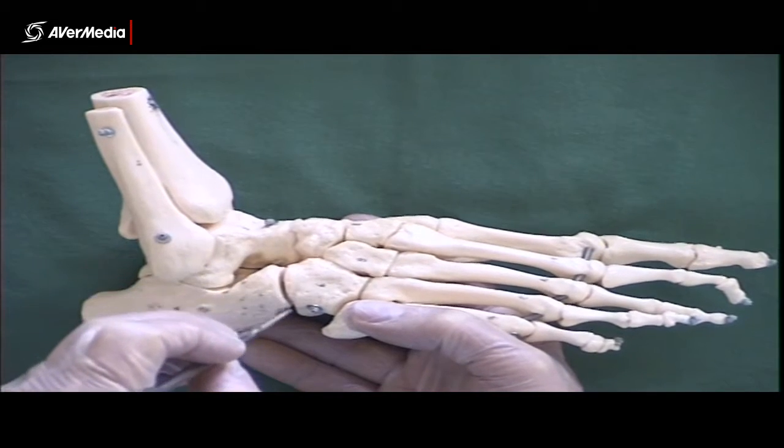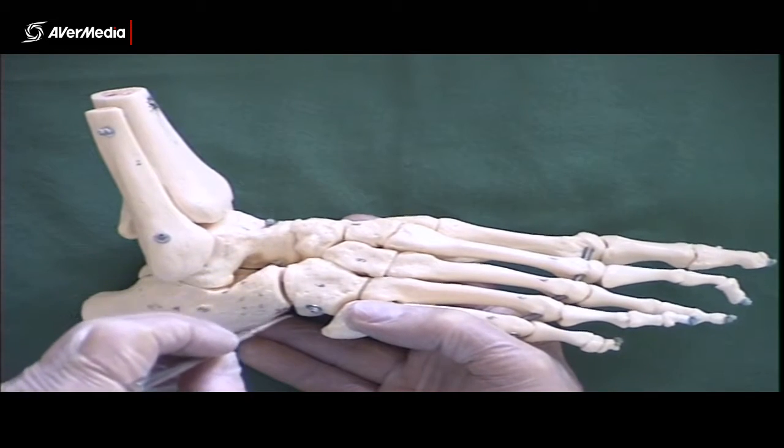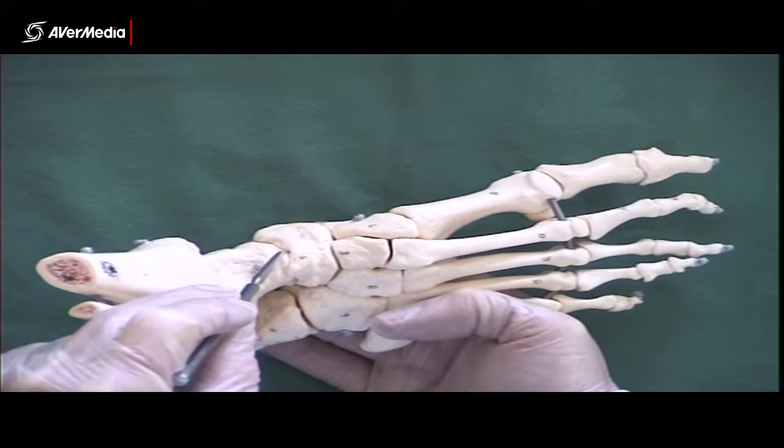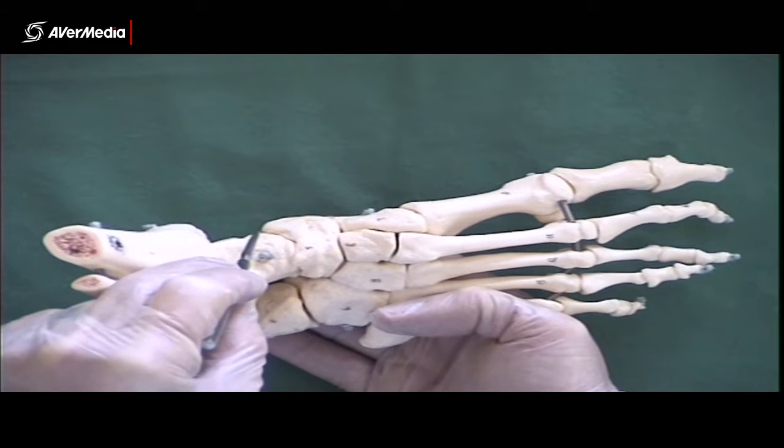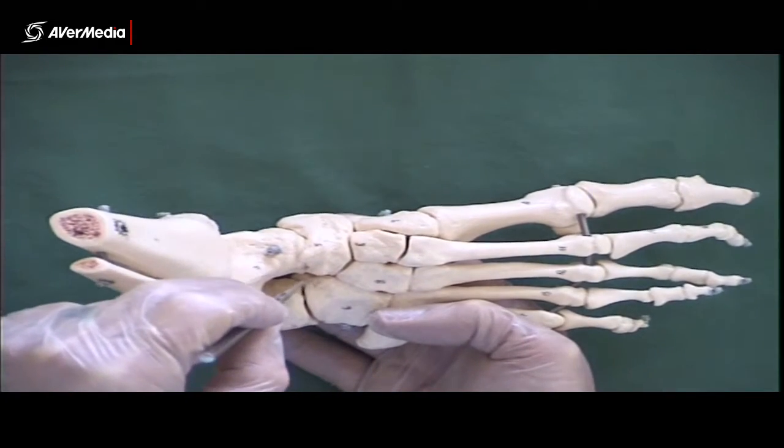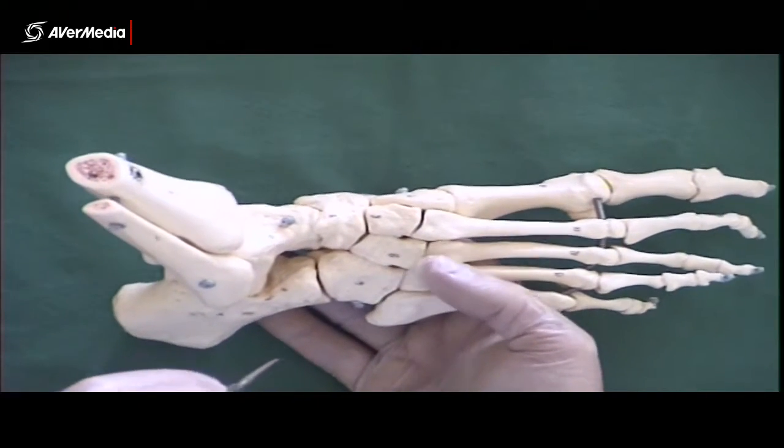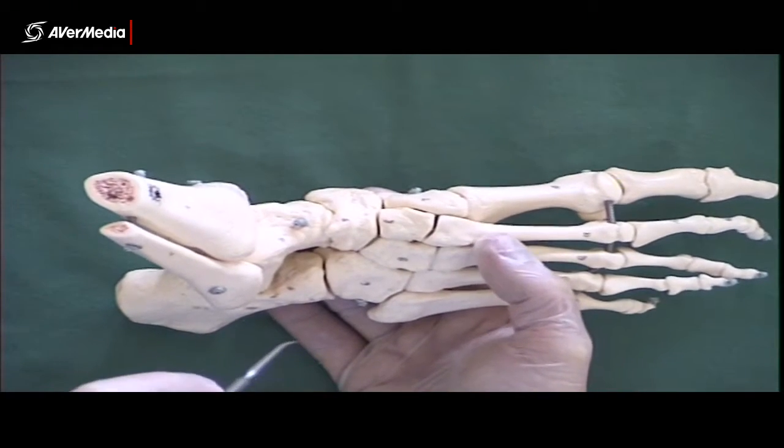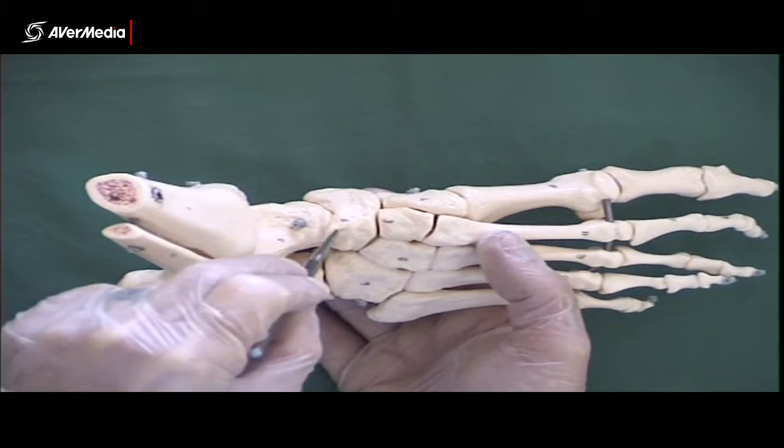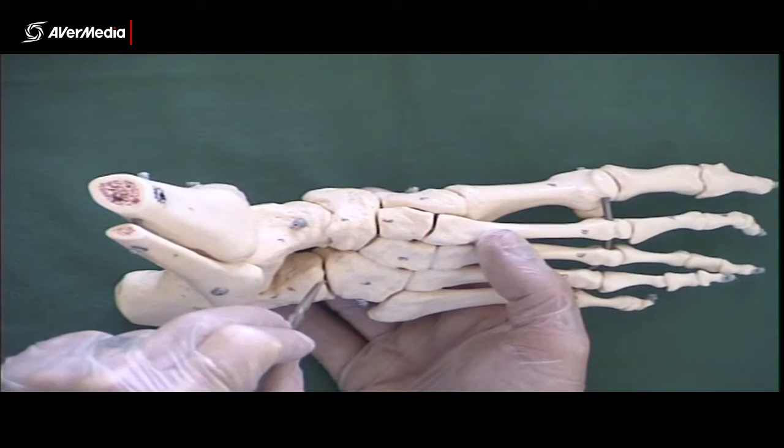This one here would be the calcaneocuboid joint, but if the blu-tac carried on over here, if it went right across the foot there, that would be the transverse tarsal or mid-tarsal joint. So that's the functional joint that runs right across the foot.